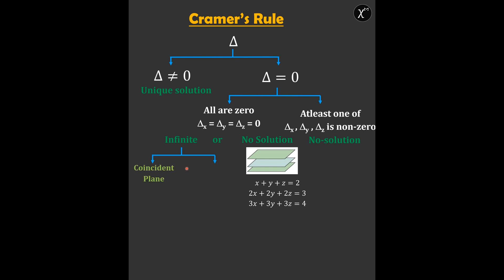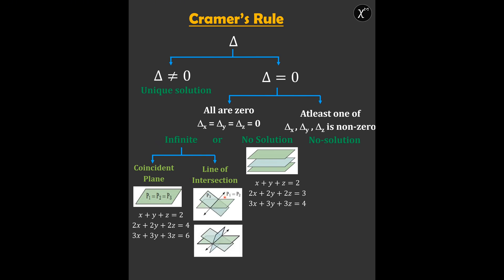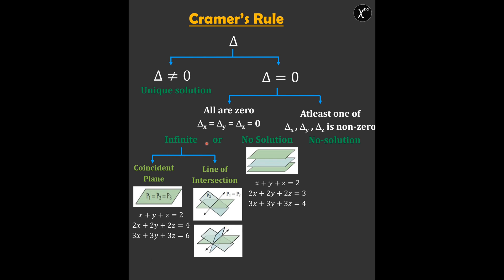Now comes infinite solutions. This can again be divided into two cases: first is the coincident plane, and the other is the line of intersection. Coincident planes means all three planes are identical — we can see this in the example where all three equations represent the same plane, and since a plane has infinite points, we get infinite solutions. Another way is the line of intersection, where two or three planes intersect along a line, and again since a line has infinite points, we get infinite solutions.